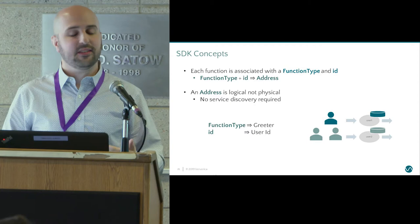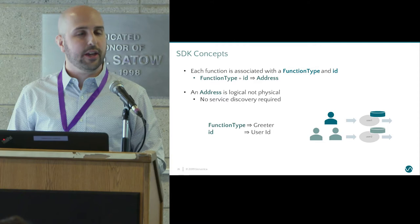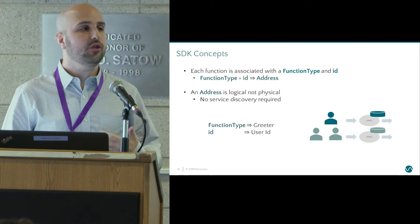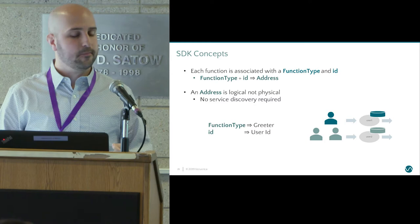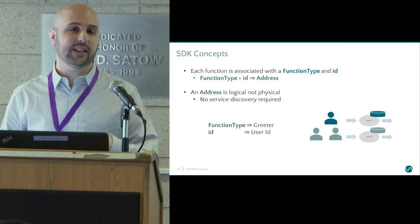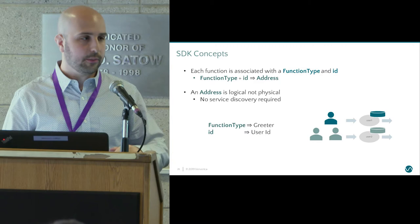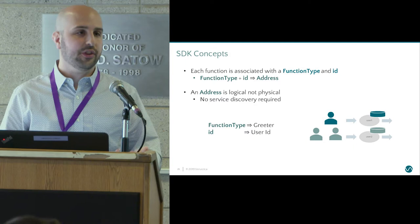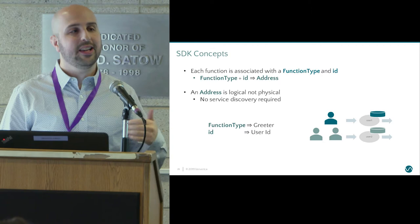When you go to message a function, you're always sending it to an address where that address is made up of some function type and an identifier. Think of your function type as being very similar to a class in an object-oriented language — what sort of function do you want to message — where the ID is the particular instance. And because everything is logical here, there's no service discovery required. You can simply message a function and your record is guaranteed to get to the right place.